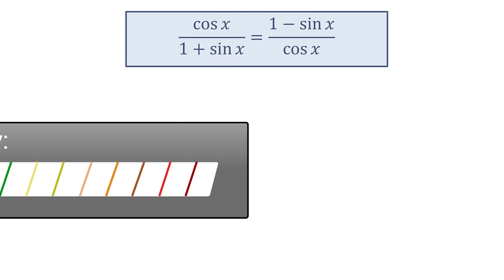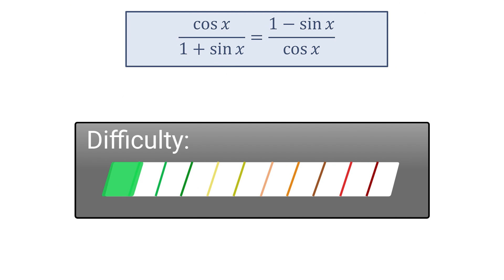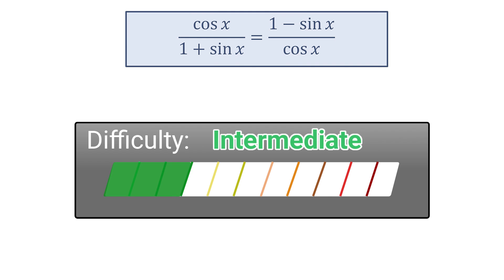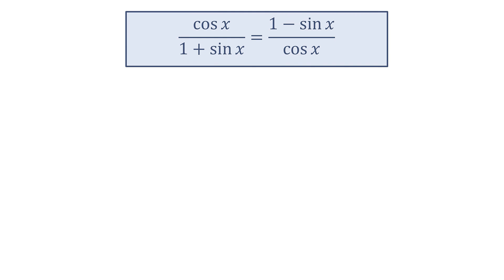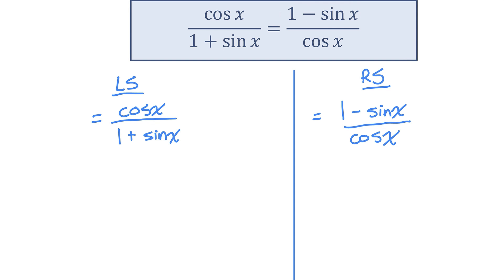Identity number three. I'll separate into left and right side. To prove this identity, I'm going to use a strategy called multiplying by the conjugate — multiplying top and bottom of the left side by the conjugate of the denominator, which is 1 minus sine x. Because I'm doing it to the top and bottom, I'm not changing its value; I'm really just multiplying by 1. But when I rewrite this as a single fraction, you'll see why that's useful.